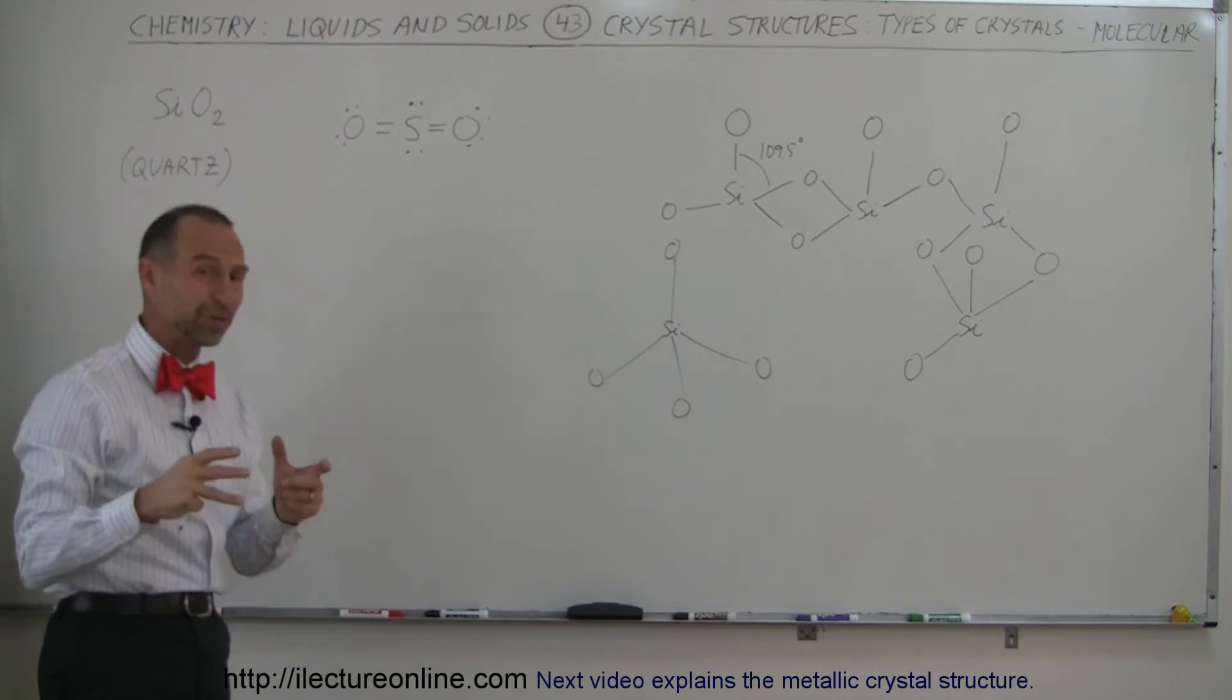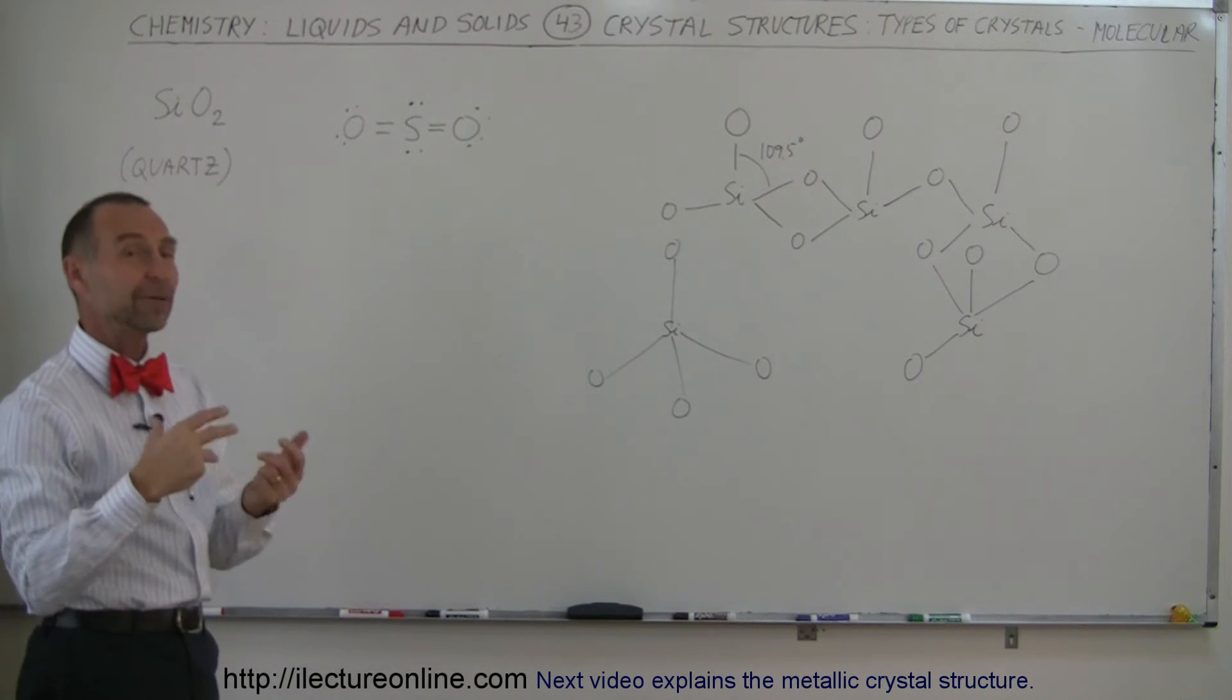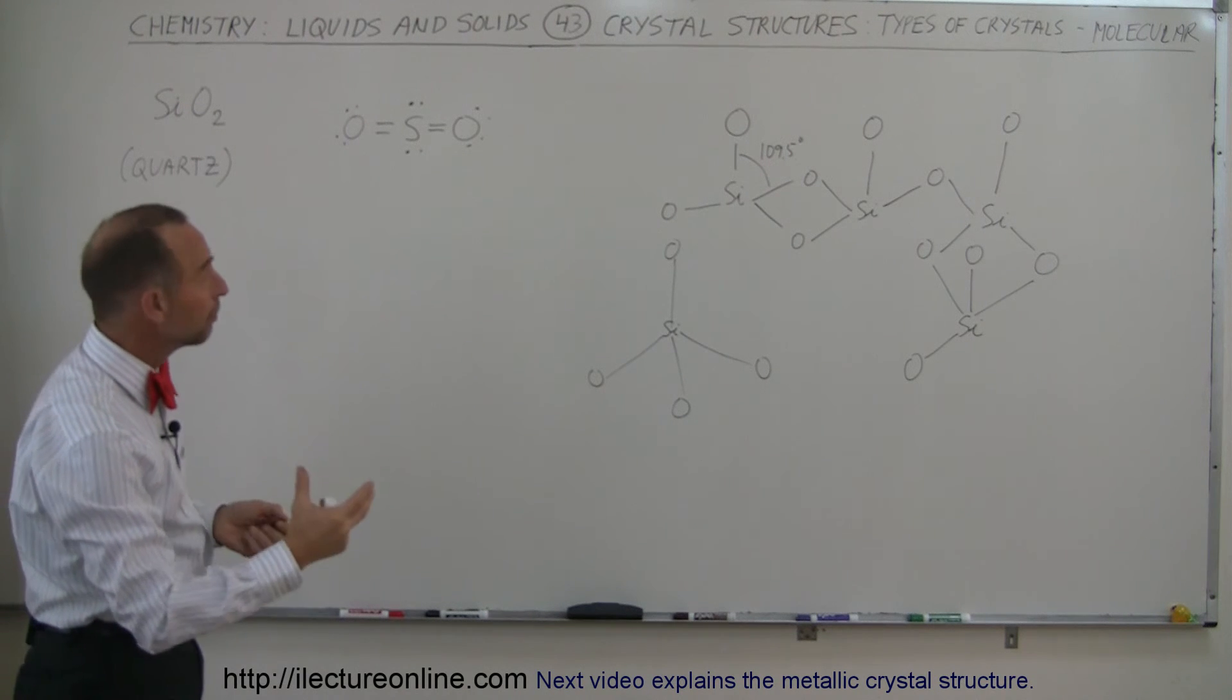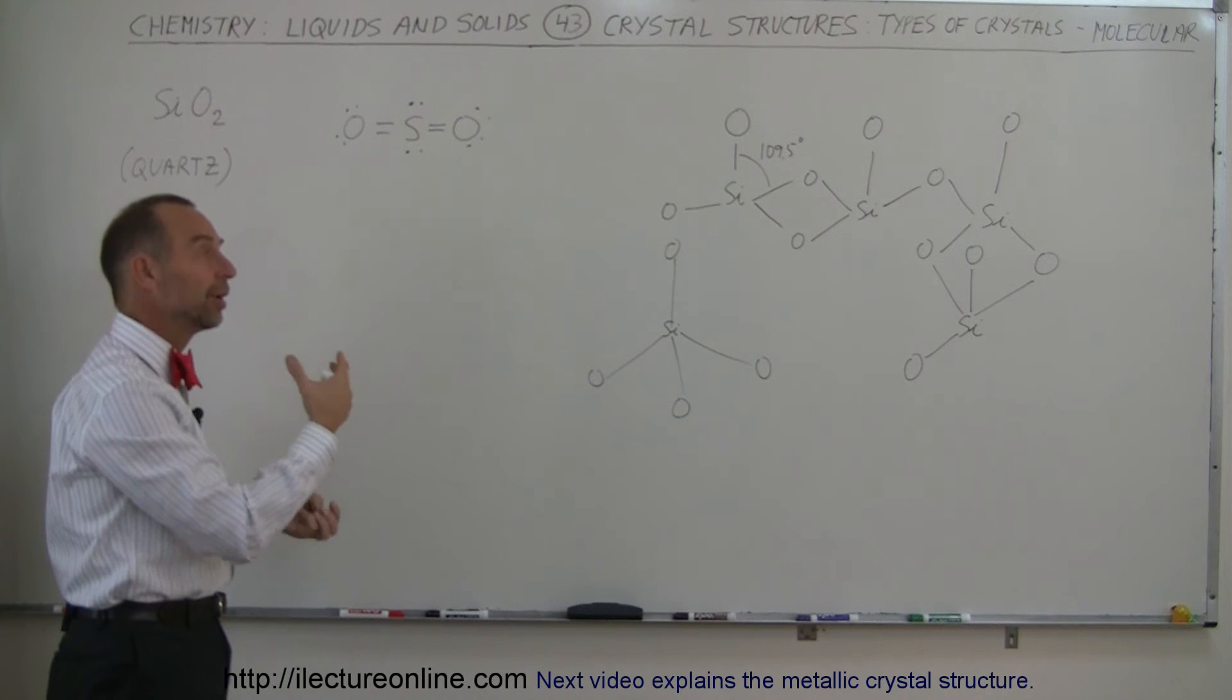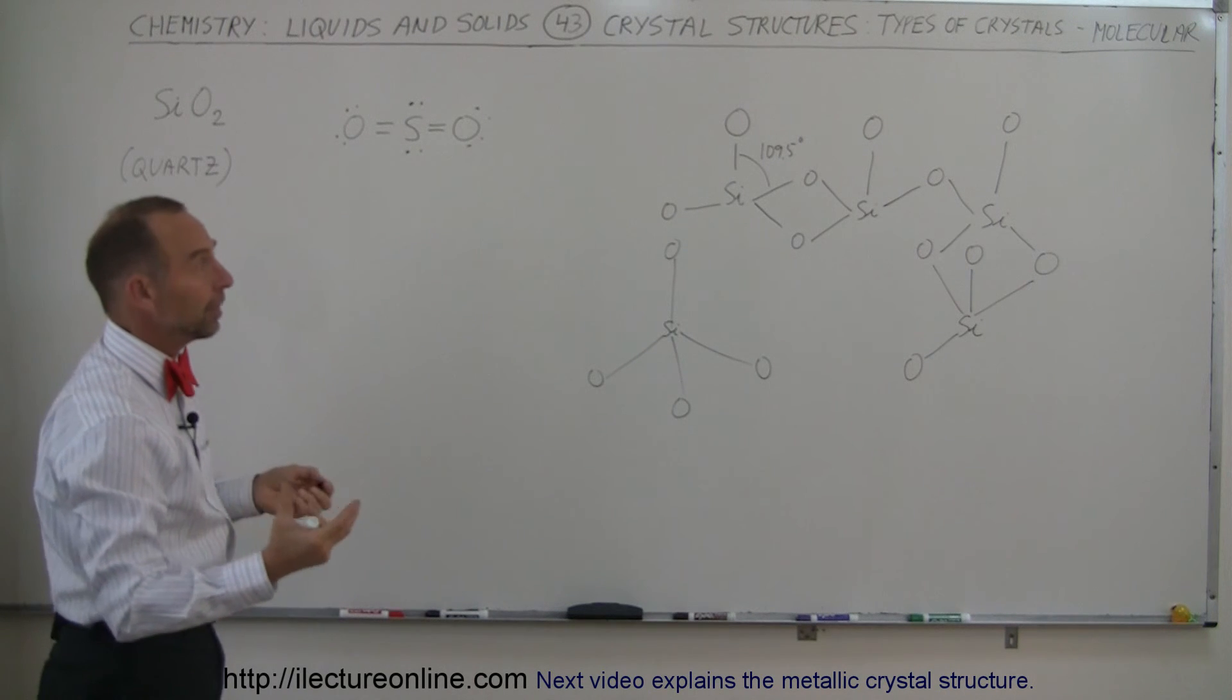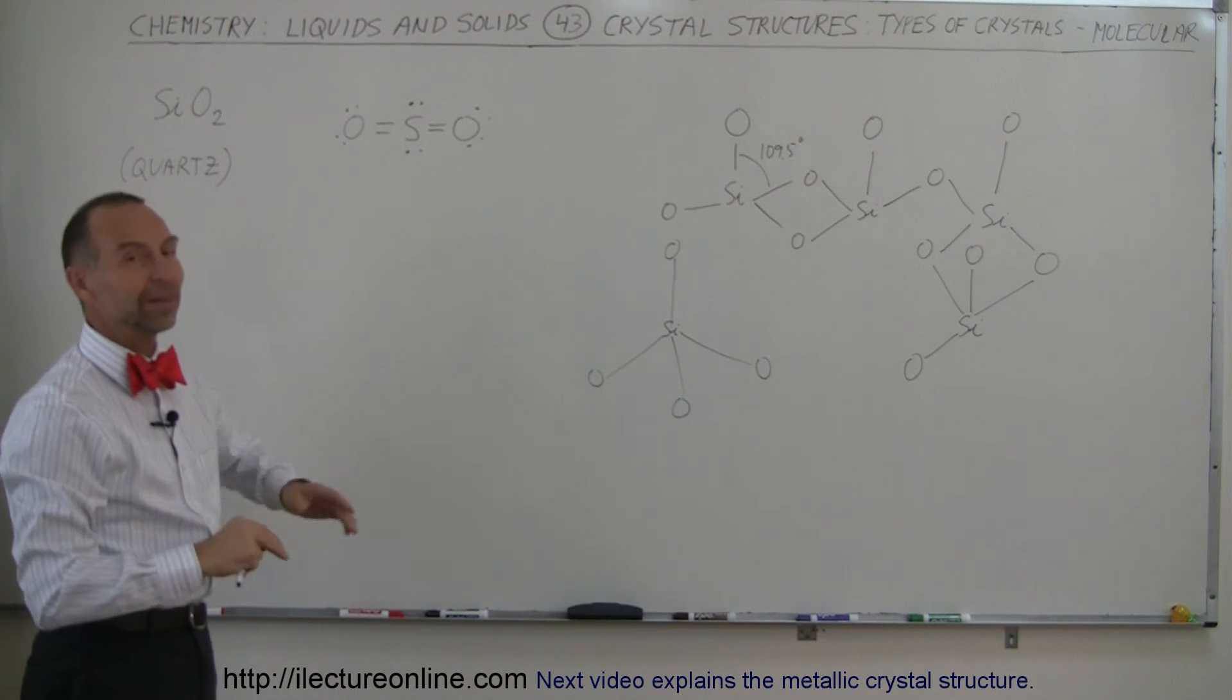That happens, you end up with something that's really hard, has a very high boiling point, has a very high melting point, and so just like diamond, it has a lot of the similar properties, but of course not quite like diamond.